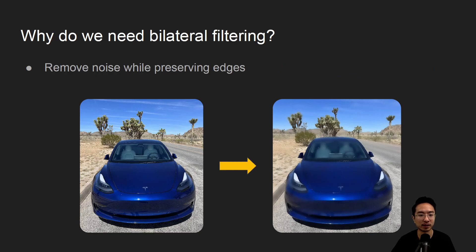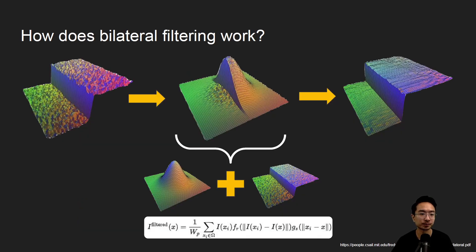So why do we need bilateral filtering? You could preserve edges while removing noise. If you notice here, the outline of the car is actually still pretty good, and it's blurring individual parts of the image separately. That might be useful in some cases where edges are important.